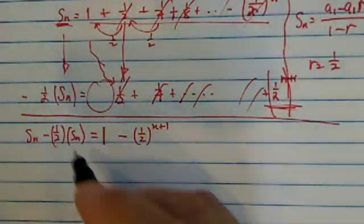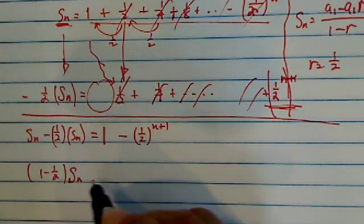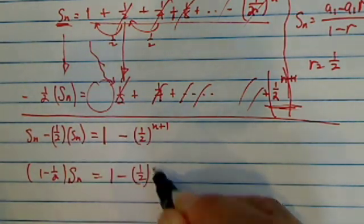Now two more steps. We're right there. So Sn, (1 - 1/2) times Sn is equal to 1 - (1/2)^(n+1). Okay?